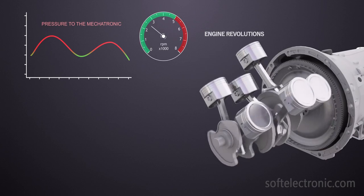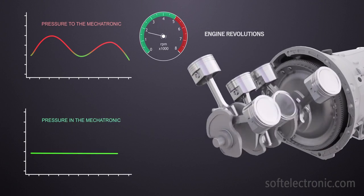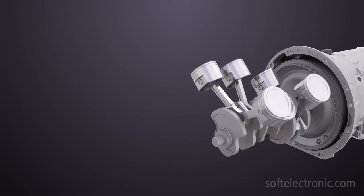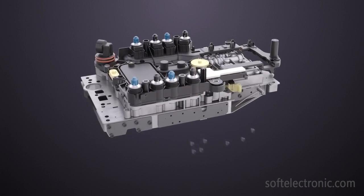For the proper work of the automatic transmission, it's necessary to have constant and invariable working pressure. That's why, when entering the valve body, the fluid pressure is first regulated by a specific valve.